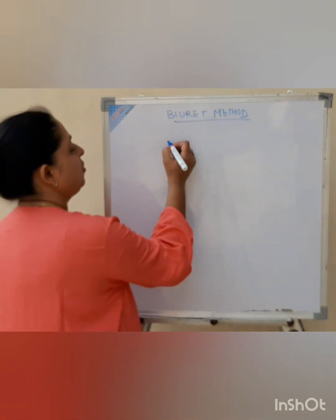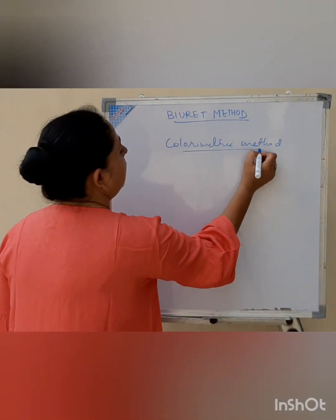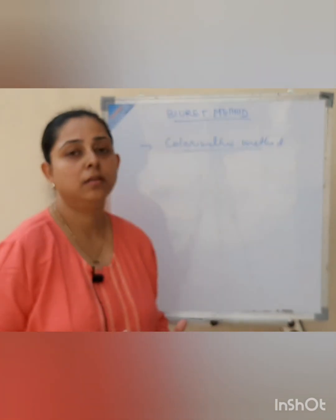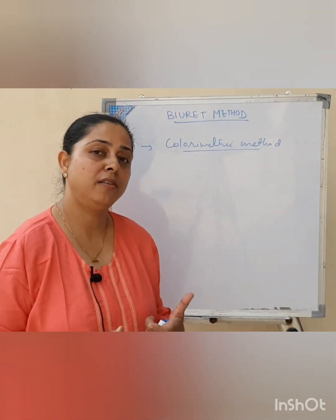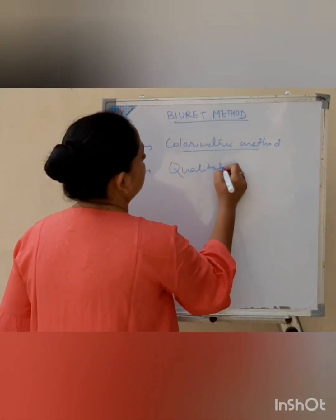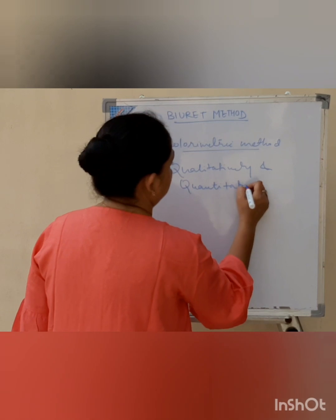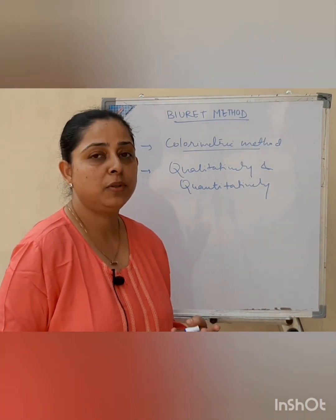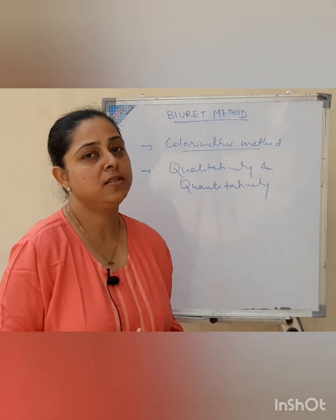This biuret method is a colorimetric method. That means in this method, proteins are made to react with a reagent leading to formation of some colored complex, and the intensity of the colored complex is then read using a colorimeter. This method can be used qualitatively as well as quantitatively. That means we can use this method to see whether proteins are present in the sample or not, and also to quantify or estimate the amount of proteins present in the sample.